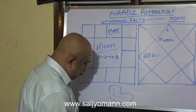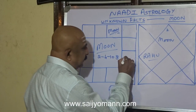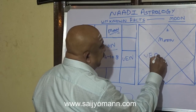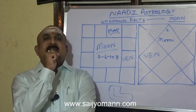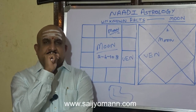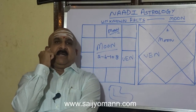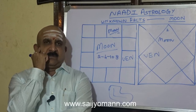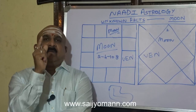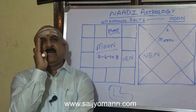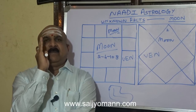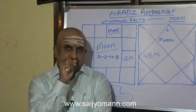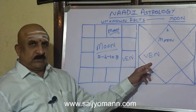Venus in the 4th house from Moon: wherever you go, Venus becomes important. If Venus is there in the 4th house from Moon, the mother's mother's house — the native's maternal grandmother's house — will be rich. They will have sufficient or abundant money, landed property, or whatever. This is what the mother's mother's 4th house shows when Venus is there.